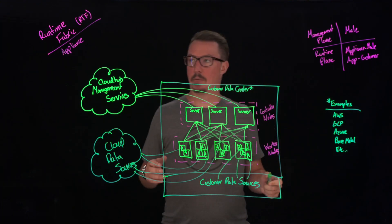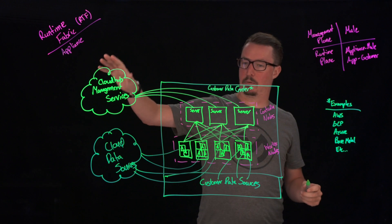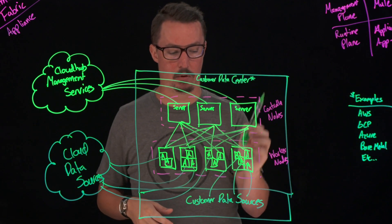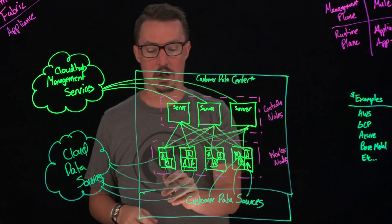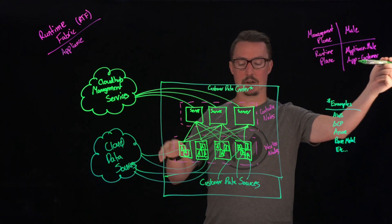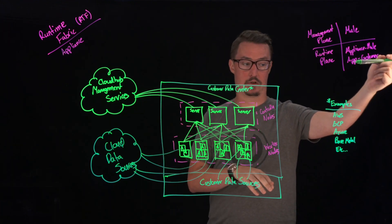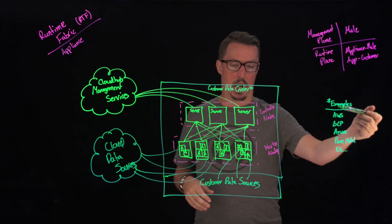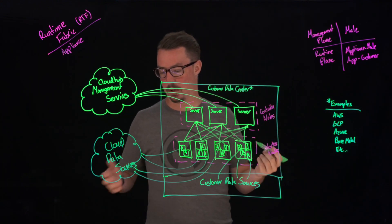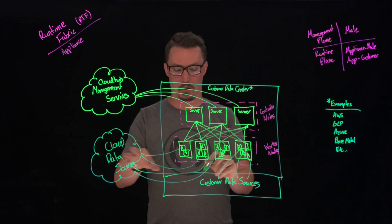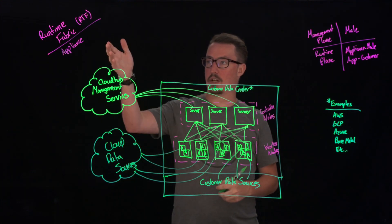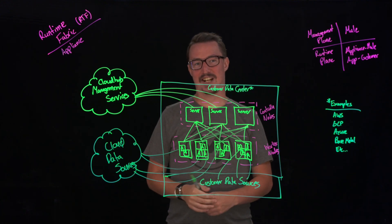From a high-level perspective, we have our Runtime Fabric appliance model, where Runtime Fabric appliance is going to help you deploy Docker and Kubernetes within your own environment so that you can have containerized runtimes. The management plane is still going to be managed by MuleSoft, but the applications themselves will be managed by the customer. You could have any type of data center you want — AWS, GCP, Azure, Bare Metal, VMware, whatever it may be — and you'll need to enable the connectivity from all the different systems. This is our Runtime Fabric appliance model. Thank you and have a great day.